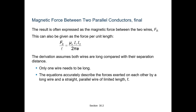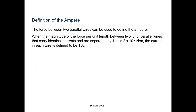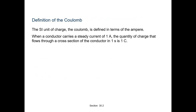The derivation assumes both wires are long compared with their separation; only one wire actually needs to be long. The equation accurately describes the force exerted on each wire. The SI unit of charge, the Coulomb, is defined in terms of Amperes: when a conductor carries a steady current of 1 Ampere, the charge flowing through a cross-section in 1 second is 1 Coulomb.